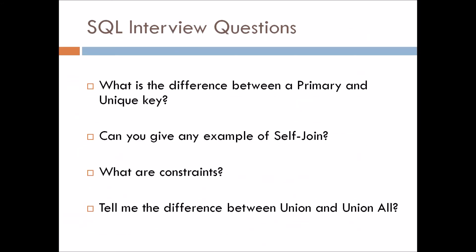This is the SQL question that can be asked. So first one is, what is the difference between a primary and a unique key? Second one is, can you give any example of self join? Any real time example of self join that you can explain here? Third one is, what are constraints? And the last one is, tell me the difference between union and union all. Let's move ahead with the next section based on SQL only.